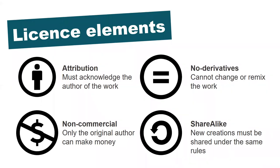You've probably come across a Creative Commons license at some point, even if you're not 100% sure what the symbols mean. Each of the main licenses is made up of a combination of the four core elements seen here on the screen. Each license must include the attribution element to acknowledge the creator of the work, represented by the person symbol.